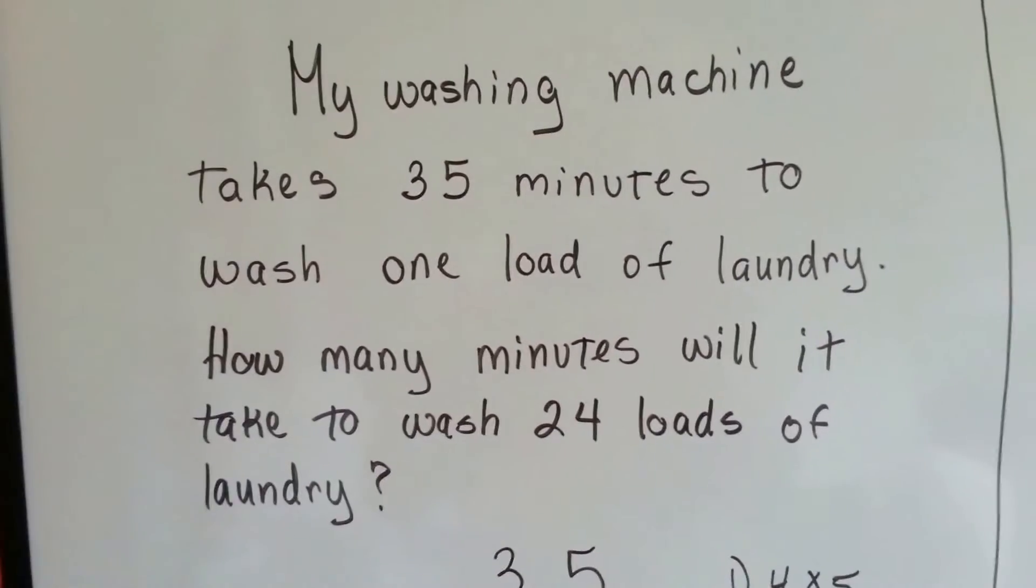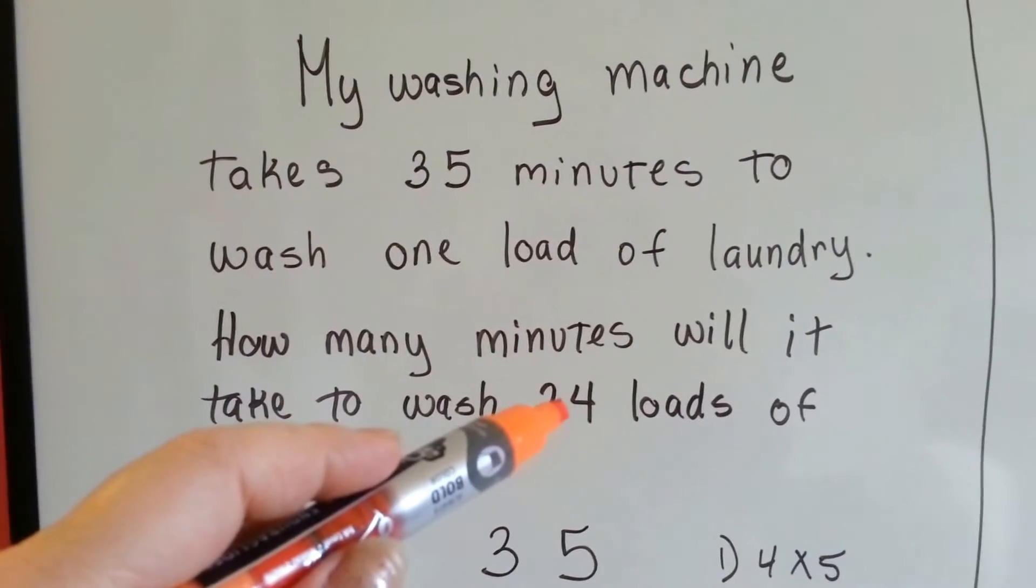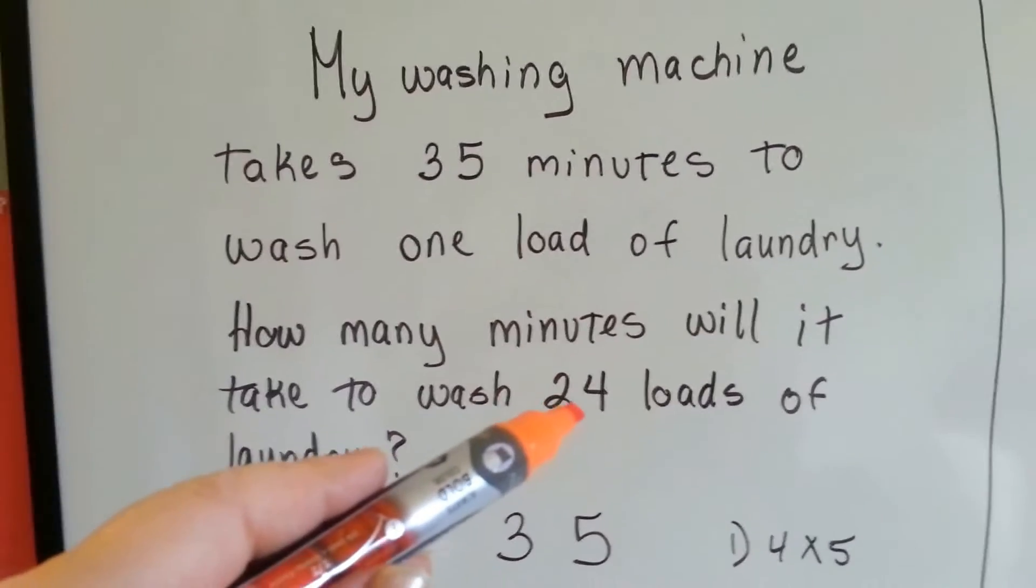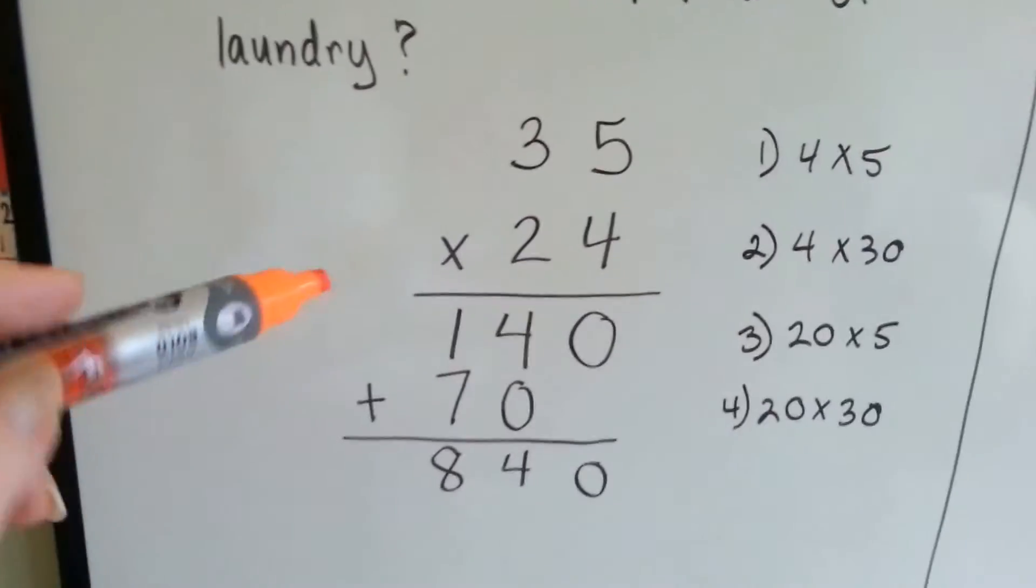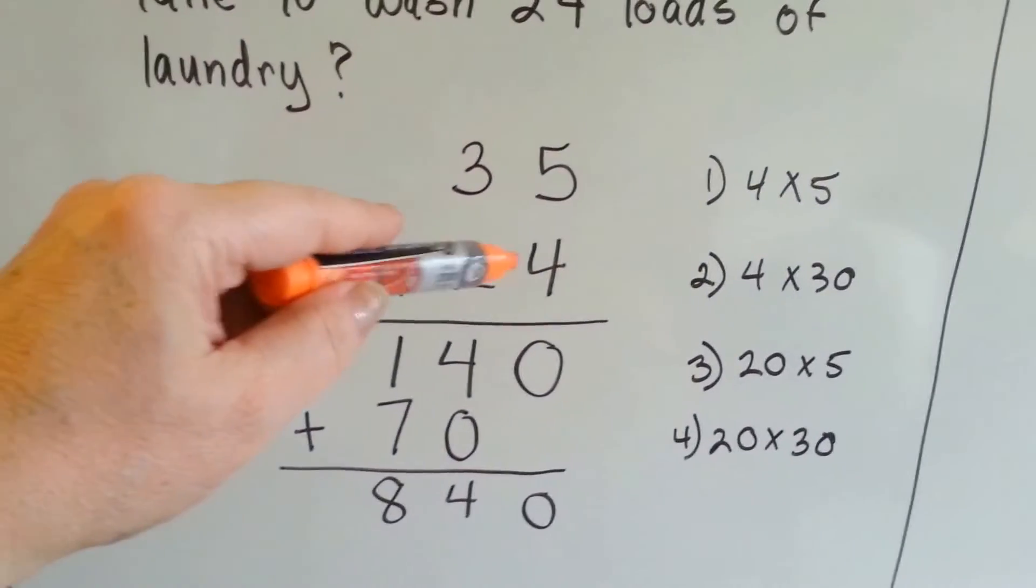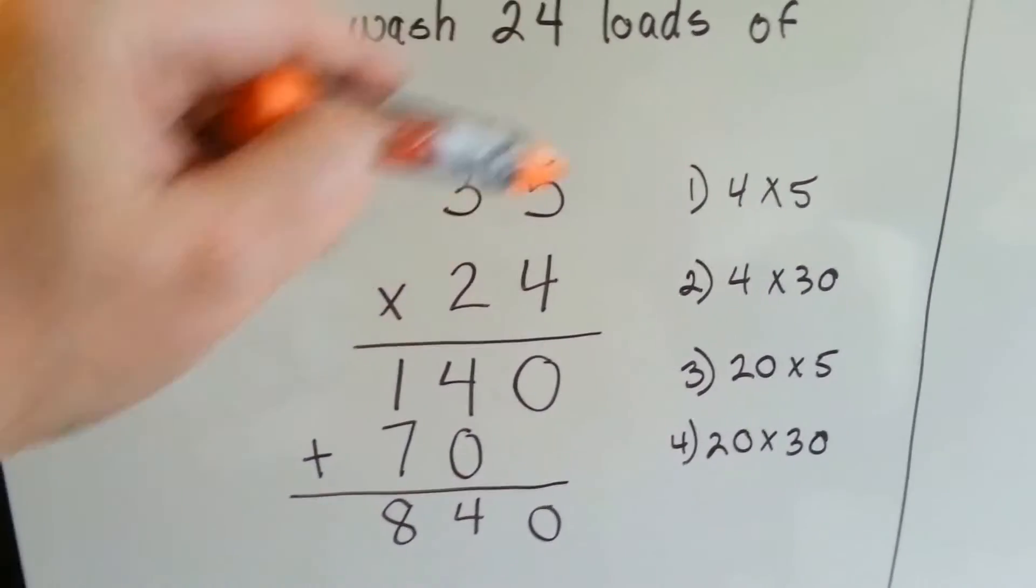Well, I'll need to multiply the 35 minutes for each load 24 times, won't I? So 35 times 24. The first thing we're going to do is we're going to multiply the 4 times the 5, right here.